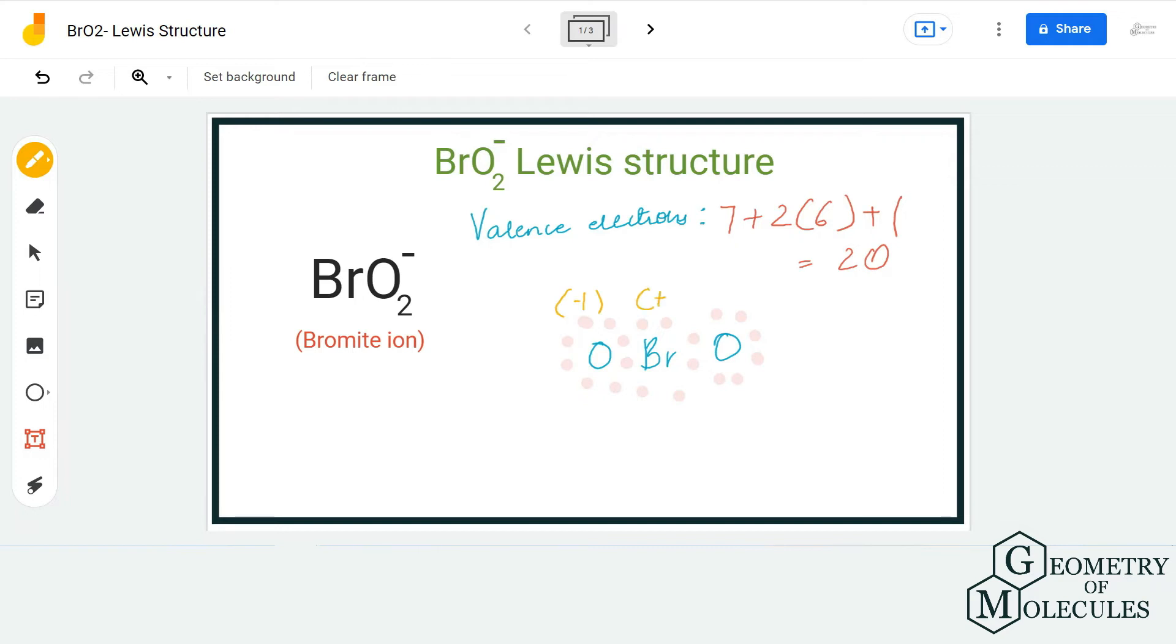...that we have linked in the description box below, or following a simple formula for calculating formal charges, you will come across charges of +1, -1, and -1. Although these result in a formal charge of -1, which is the charge of this ion...